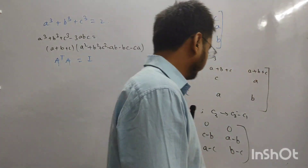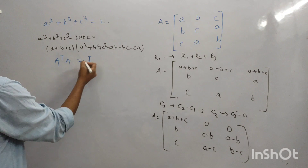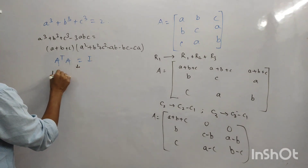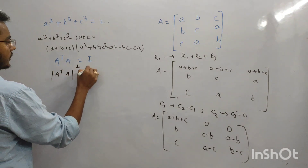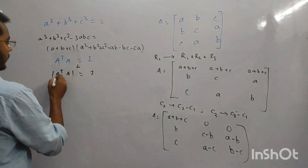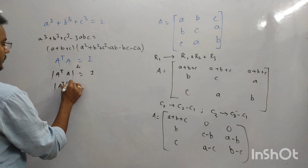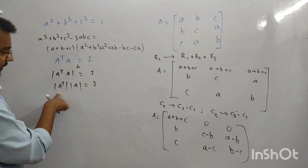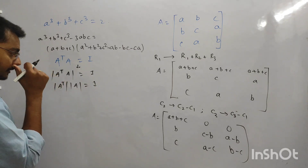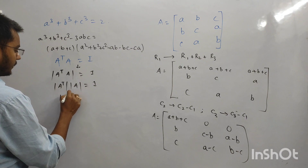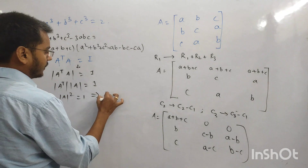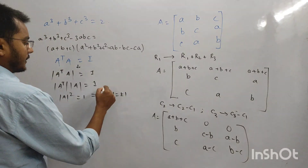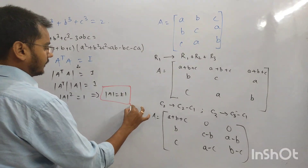ध्यान से देखना। पहले इस given condition को use करते हैं — दोनों तरफ determinant लो। A transpose into A = I का determinant = 1. तो |A transpose| × |A| = 1. Transpose का determinant उस matrix के बराबर होता है, तो |A|² = 1. This implies |A| = ±1.